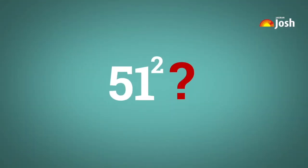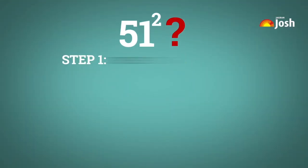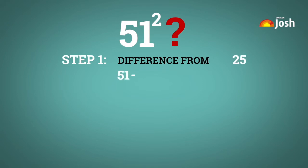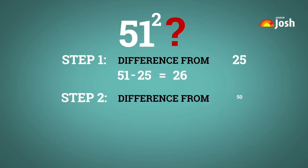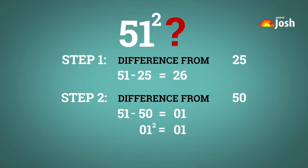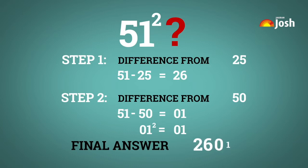If you want to find the square of 51, the first step is to find the difference from 25. That is 51 minus 25 is equal to 26. The next step is to find the difference from 50. That is 51 minus 50 is equal to 1. Now we need to find the square of 1, that would be 1. So the final answer would be 2601.